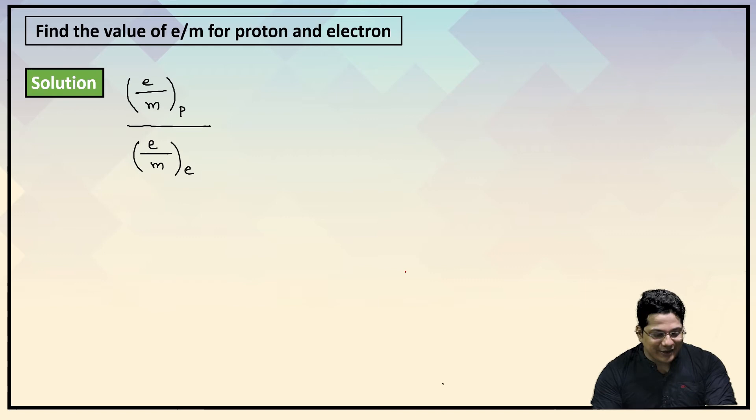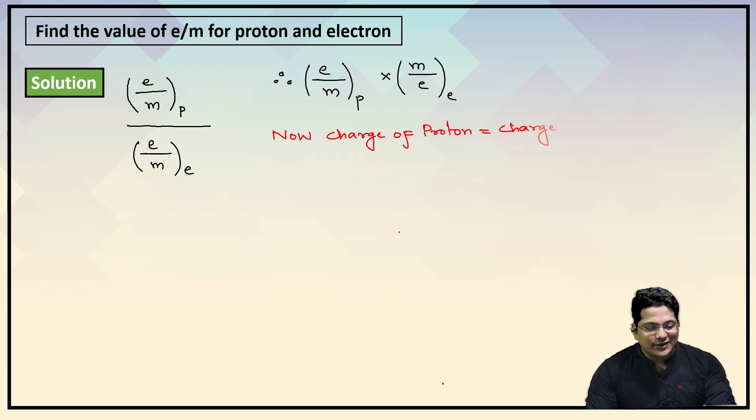Let's check the solution. We have been asked about (e/m) ratio of proton divided by (e/m) ratio of electron. If you rearrange this equation, can I say e/m of proton × m/e of electron? Now, as said in the earlier problem, we don't consider the sign of charge. So can I say the charge of proton and charge of electron would cancel each other?